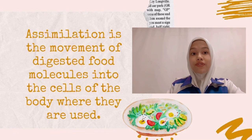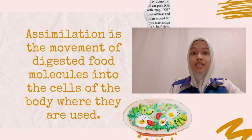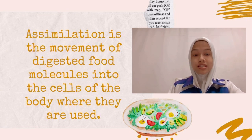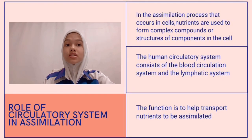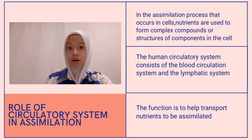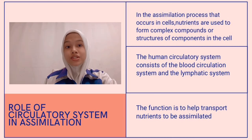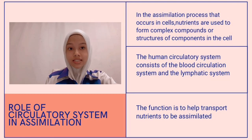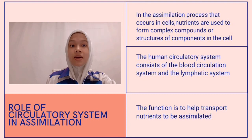Before we go further into assimilation, let's recall what we learned in Form 3. Assimilation is the movement of digested food molecules into the cells of the body where they are used. Now we look at the role of the circulatory system in the assimilation process. Nutrients that have been digested are used to form complex compounds or structural components in the cell.